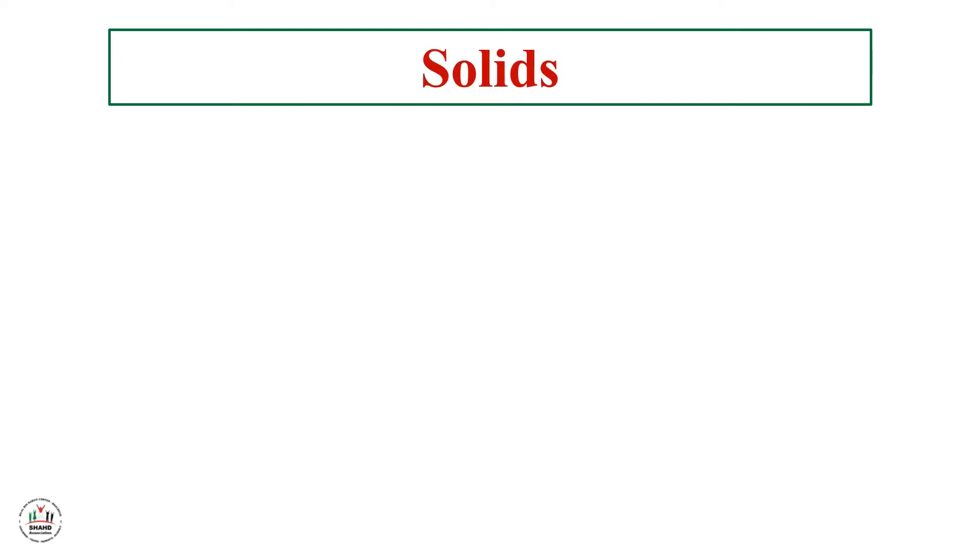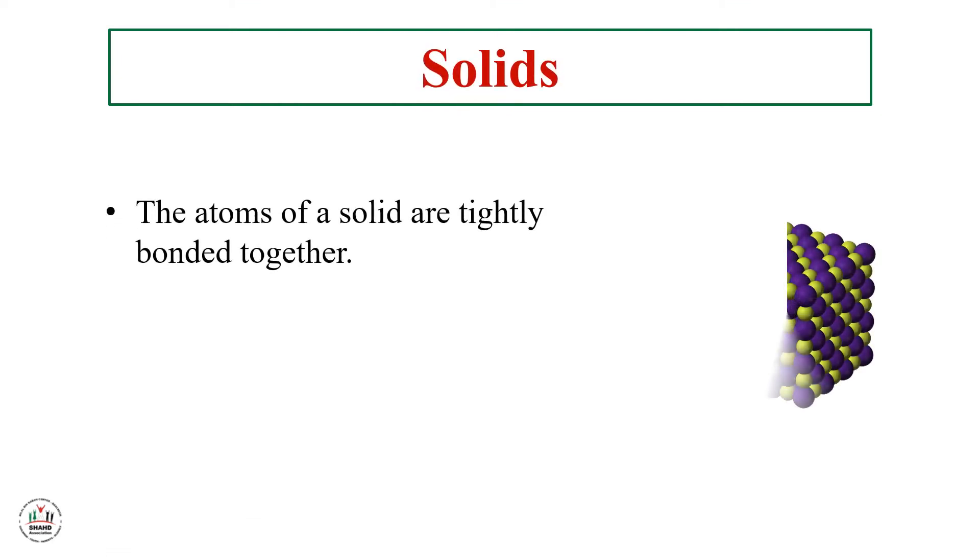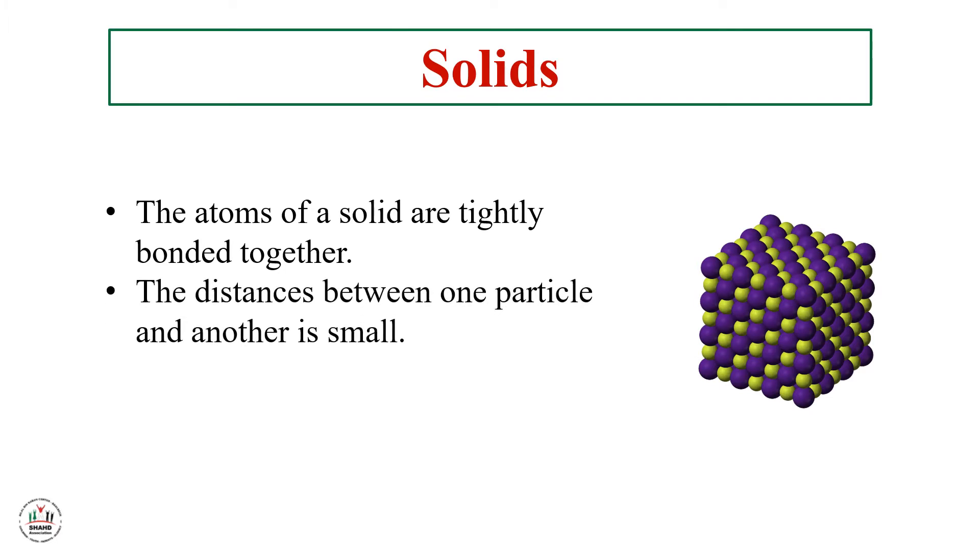I will start with solids. First, as we see in the picture, the atoms of a solid are tightly bonded together. Second, the distance between one particle and another is too small. Third, atoms have little room to move. This means they can only vibrate in their places. All the particles are stuck together with no distance between them.